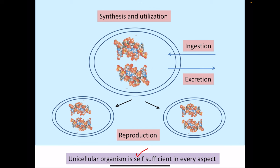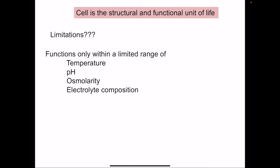There is a relationship between the environment and the unicellular organism. In our body, the cell is the structural and functional unit of life. A single cell functions only within a limited range of temperature, pH, osmolarity, and electrolyte composition, because all metabolic processes require a particular temperature and the enzymes are active only in a particular environment.